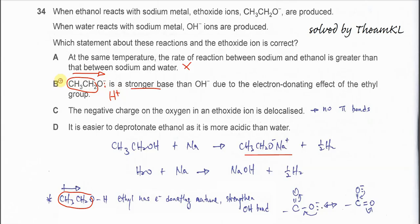Therefore, we know that answer is B. It must be a stronger base because of the ethyl group here. So why can't C be correct? The negative charge on the oxygen in the ethoxide is delocalized. First, you need to know how the ethoxide looks like. It's CH3CH2O-. Actually, no pi bonds there.